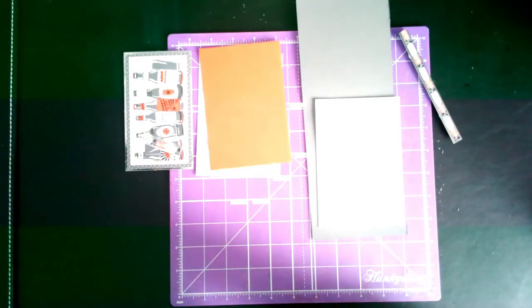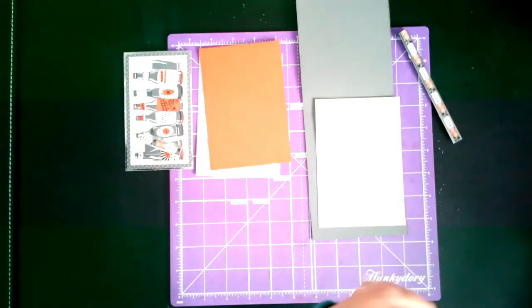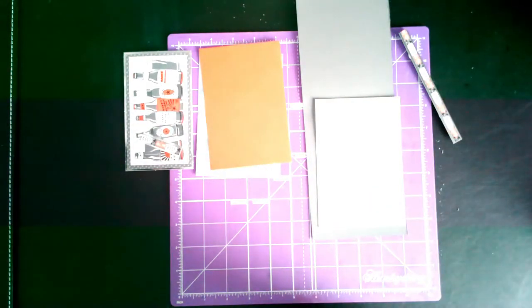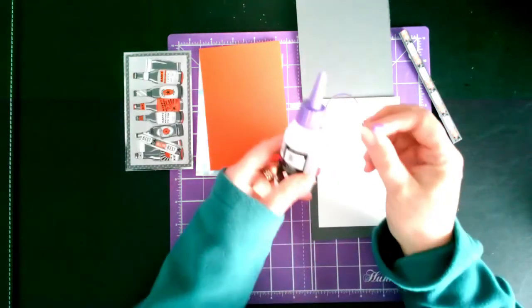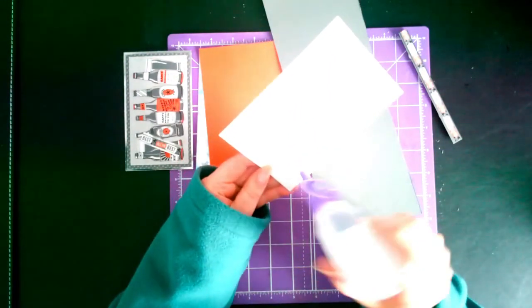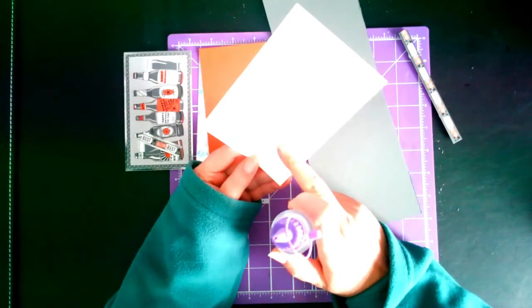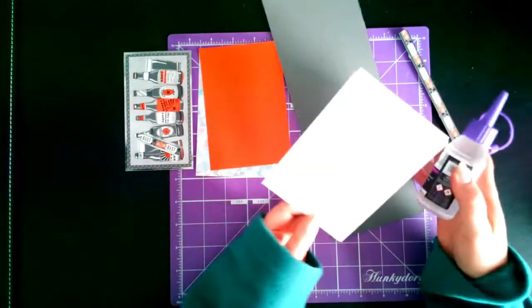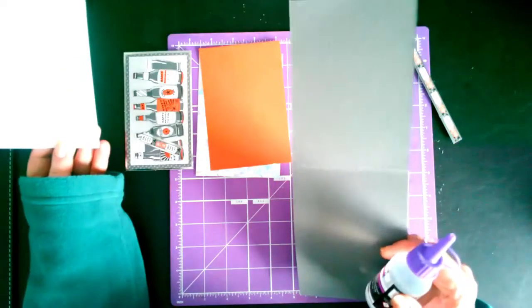Got my glue, so we shall put this piece which is three and seven eighths by five and five eighths. The card stock is a full length of an A4 and scored at four and an eighth and folding in half.